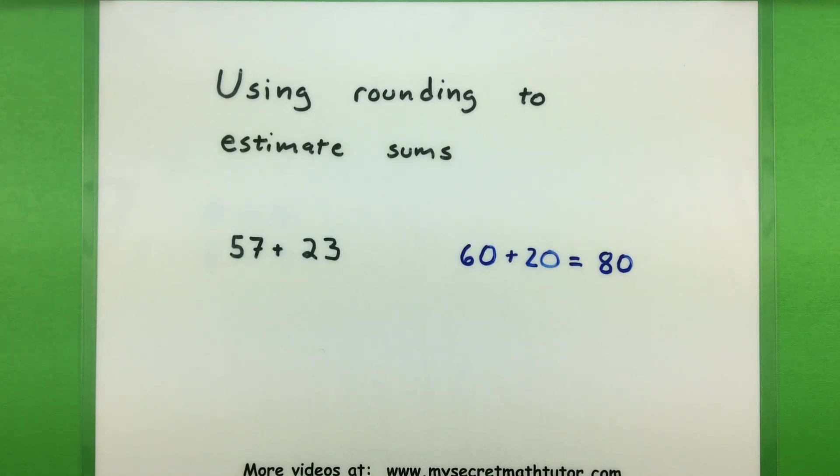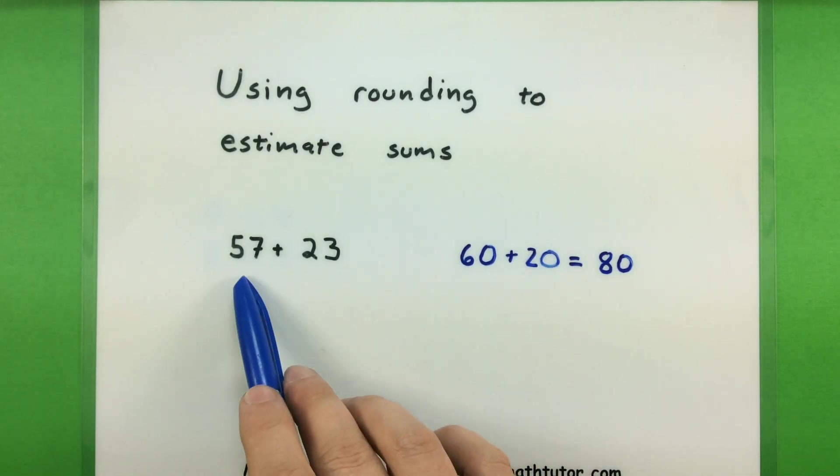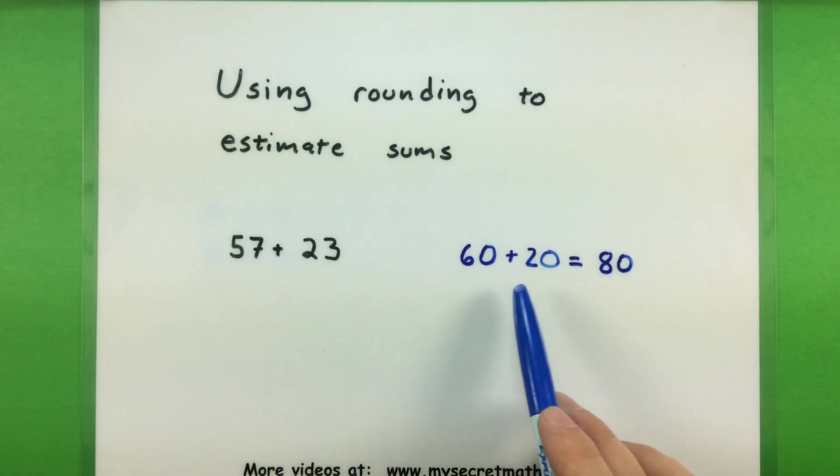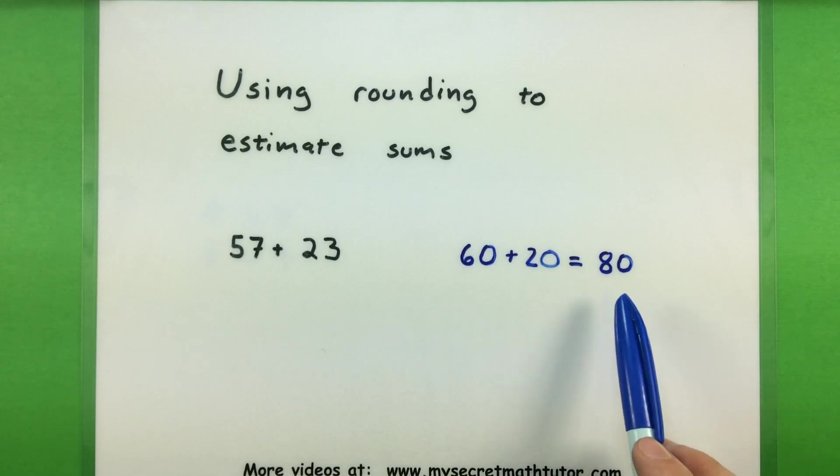A good example of what I'm talking about is maybe you want to add up the numbers 57 and 23, but rather than going through all of the work of adding the 7 to the 3 and carrying the 1 and all that other fun stuff, really you want to work on rounding the individual numbers first and then adding those rounded numbers. And in the end what you end up with is an estimate of what the true sum is.